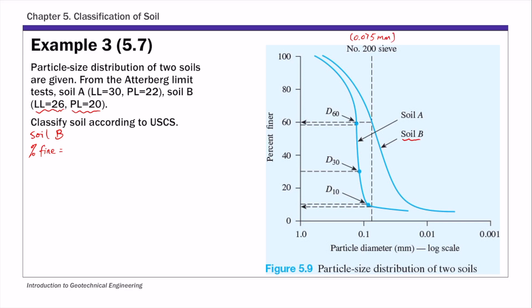So anything finer than that is classified as fines. And so the intersection of this number 200 sieve line with soil B and the corresponding y-axis, that's the percent finer or percent passing, so that's 60. So percent fine for soil B is 60%.